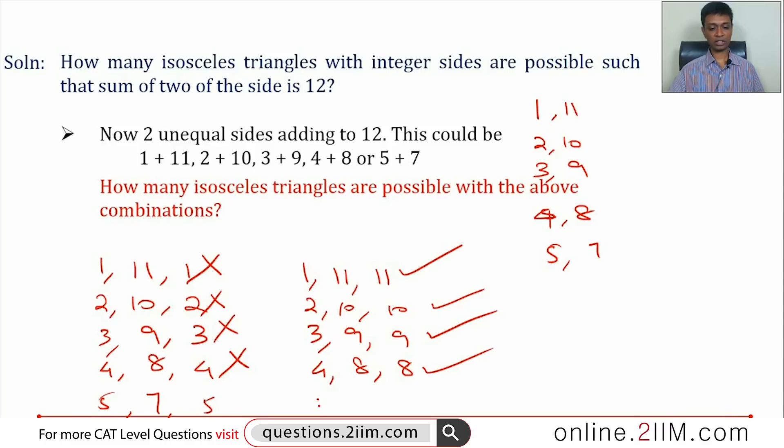5, 7, 5 or 5, 7, 7. This will be a triangle and this will also be a triangle because 5 plus 5 is greater than 7. So when the sides are unequal, we have 1, 2, 3, 4, 5, 6 different triangles.